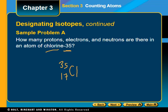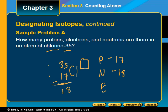Looking up chlorine gives us an atomic number of 17. From this you can figure out protons, neutrons, and electrons. The atomic number is always the number of protons. Mass number minus atomic number gives you the number of neutrons — 35 minus 17 equals 18. Since the charge corner is blank, the atom is neutral, so protons equal electrons. Chlorine-35 has 17 protons, 18 neutrons, and 17 electrons.